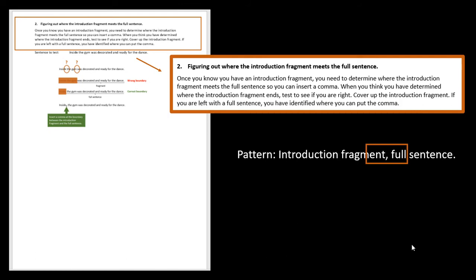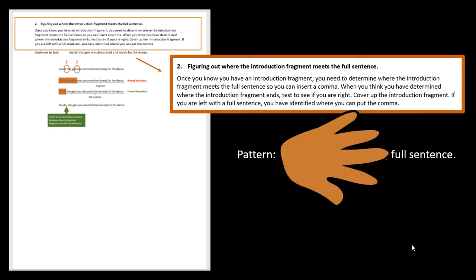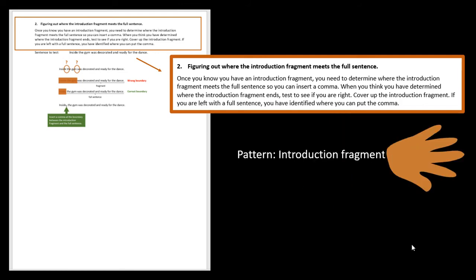So remember that pattern is we have an introduction fragment and then a full sentence. Once you think you've found the introduction fragment, cover it up and see if you're left with a full sentence. If you're left with a full sentence, then you've probably correctly identified the introduction fragment. And just to be super safe, cover up the full sentence, make sure that what you're left with that introduction part is really actually a fragment. If it is, you found the right place to put that comma.